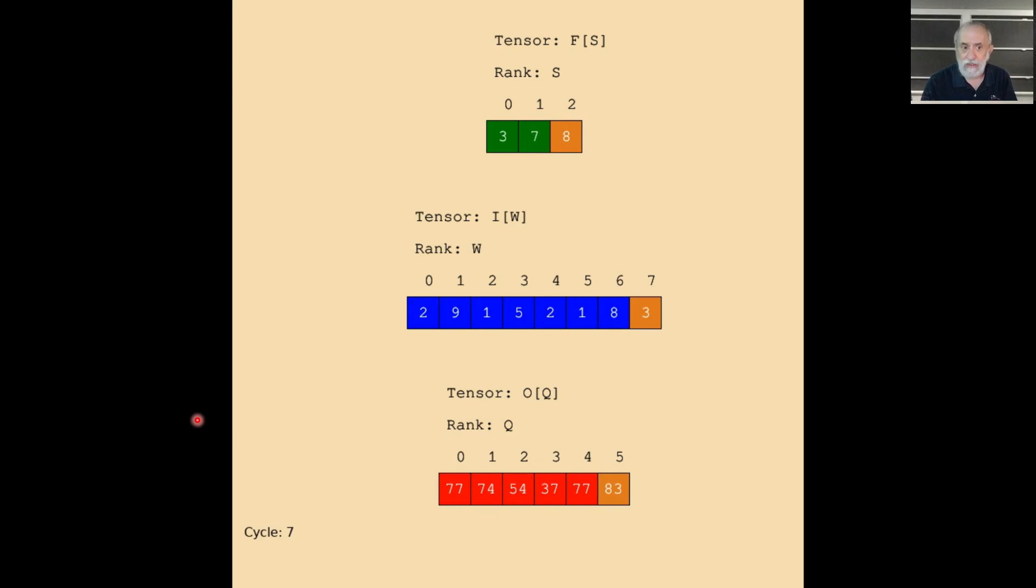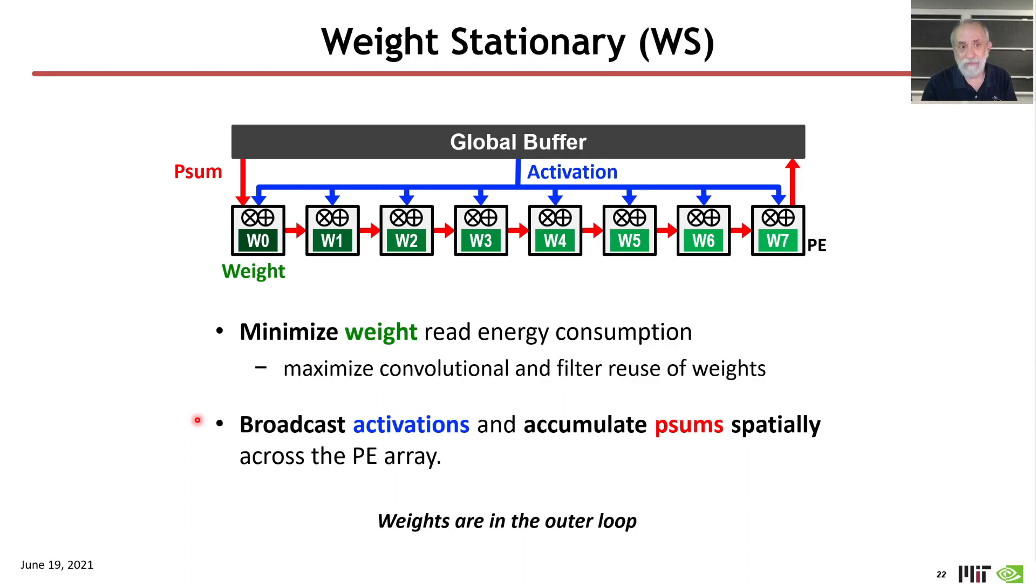So, again, the loop nest representation, now showing parallelism, is able to represent the activity in the accelerator. And if we think about what that means, in order to have an accelerator that does that dataflow, or does the actions associated with that loop nest, what we would have is we'd have a series of PEs, each one of which has a single weight stationary in it. The input activations are being used by all units, and the partial sums are being sequentially processed by each unit down the line, exactly as we saw in the video.